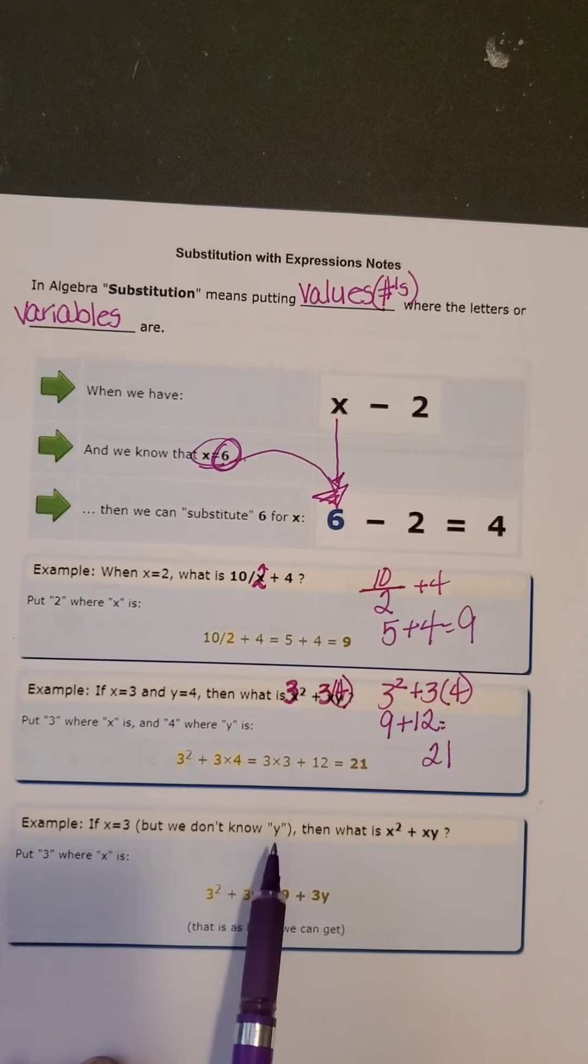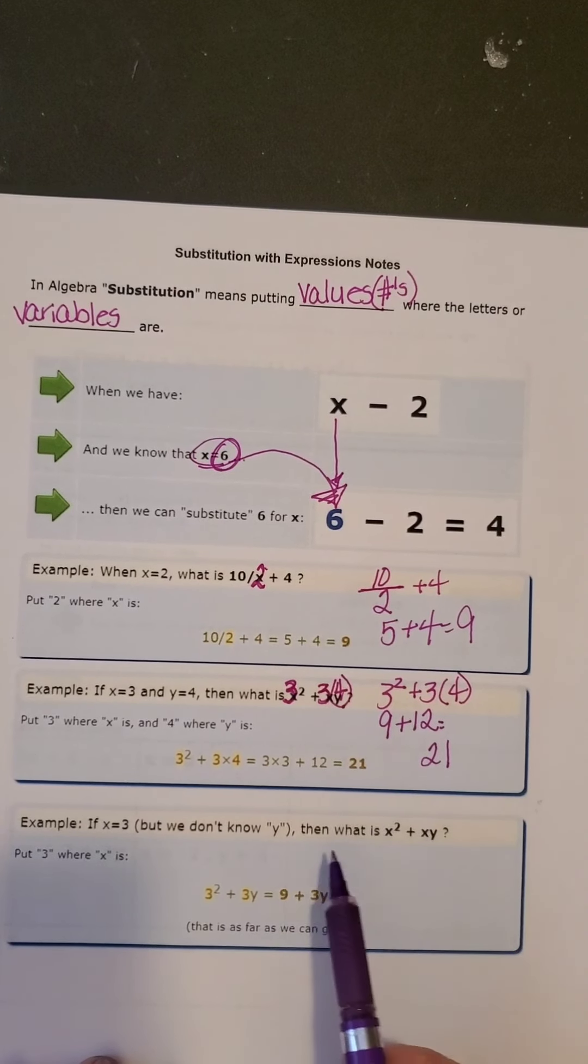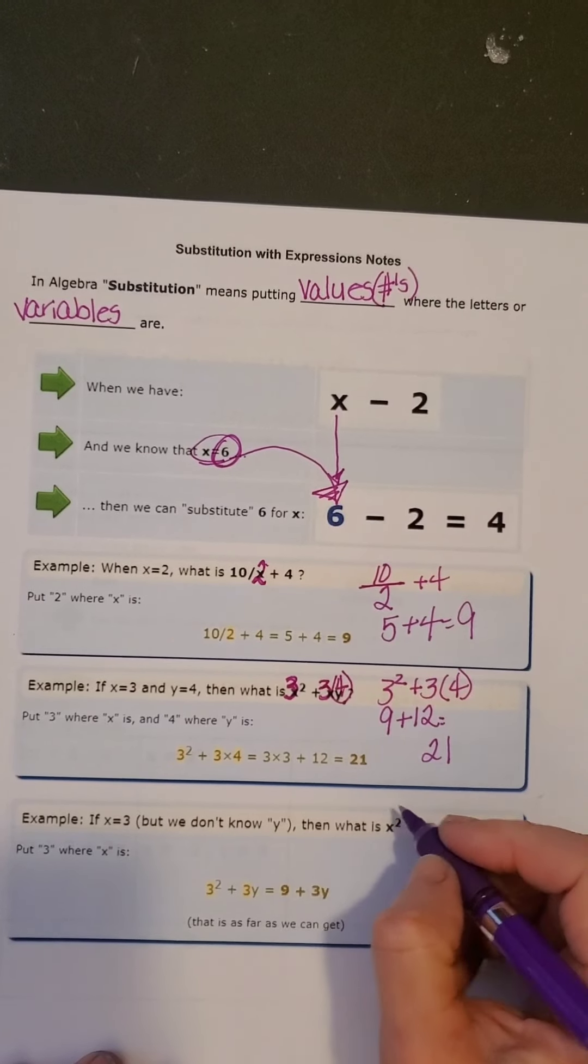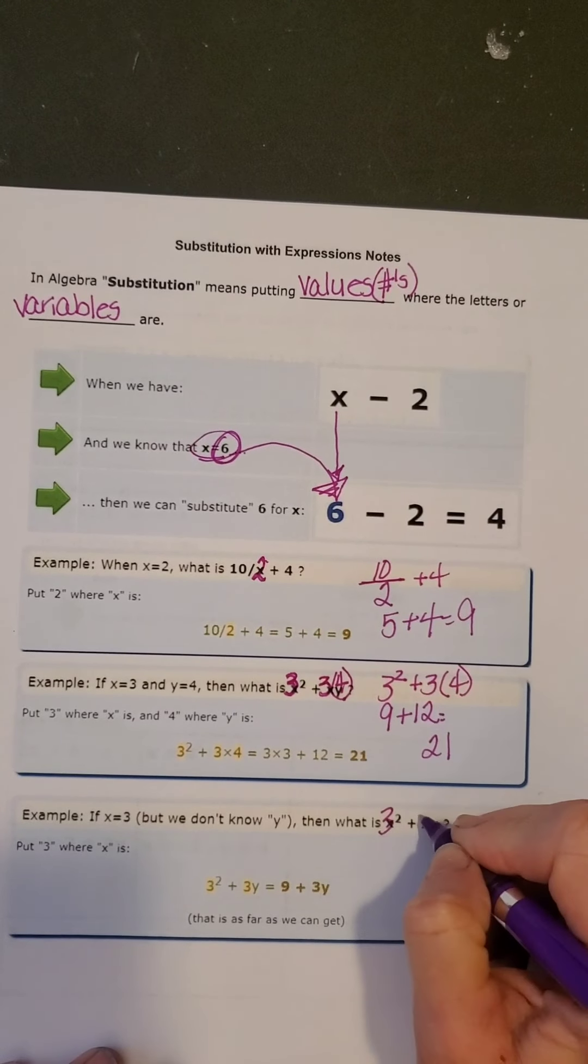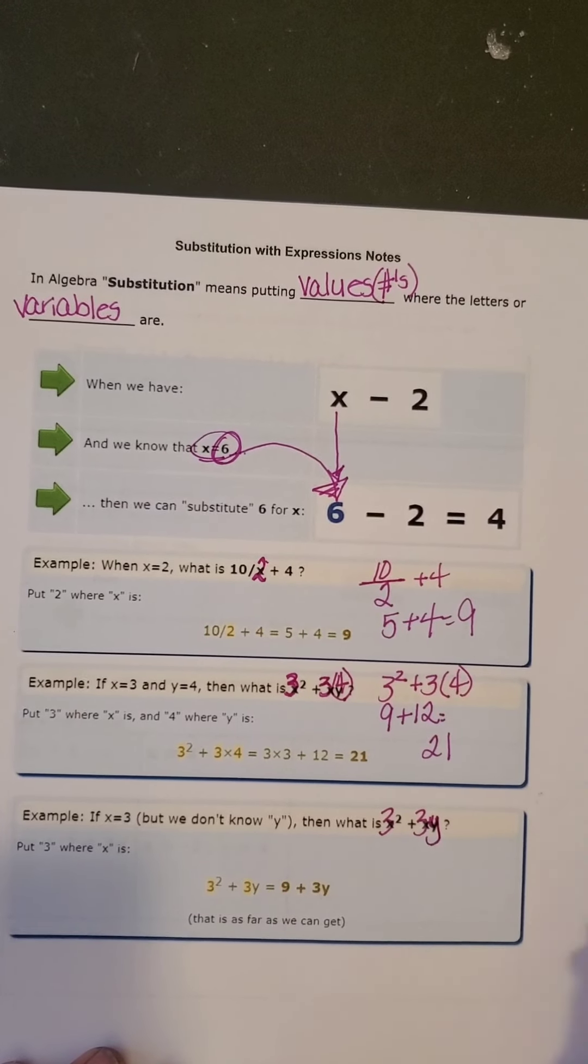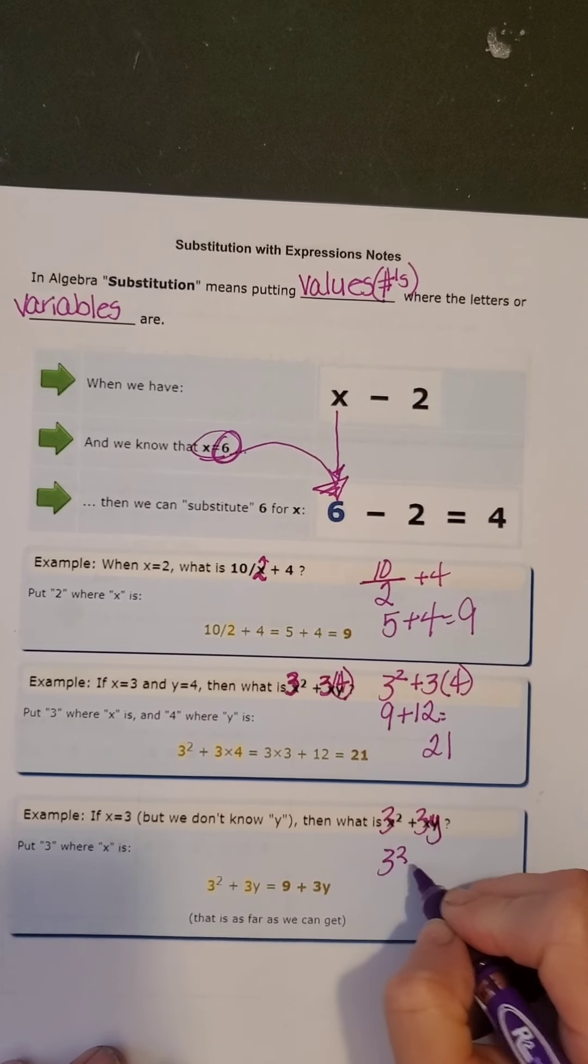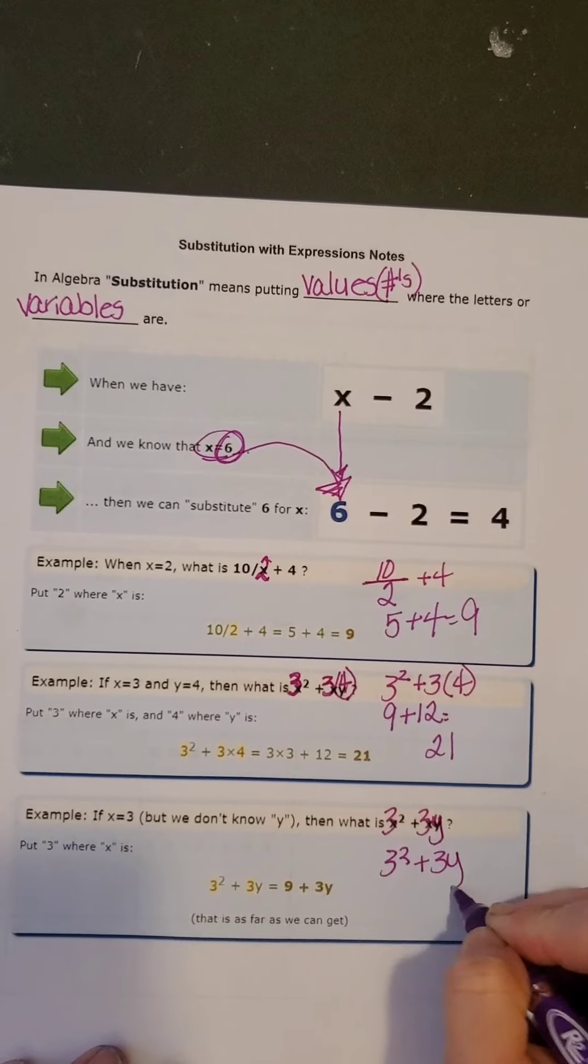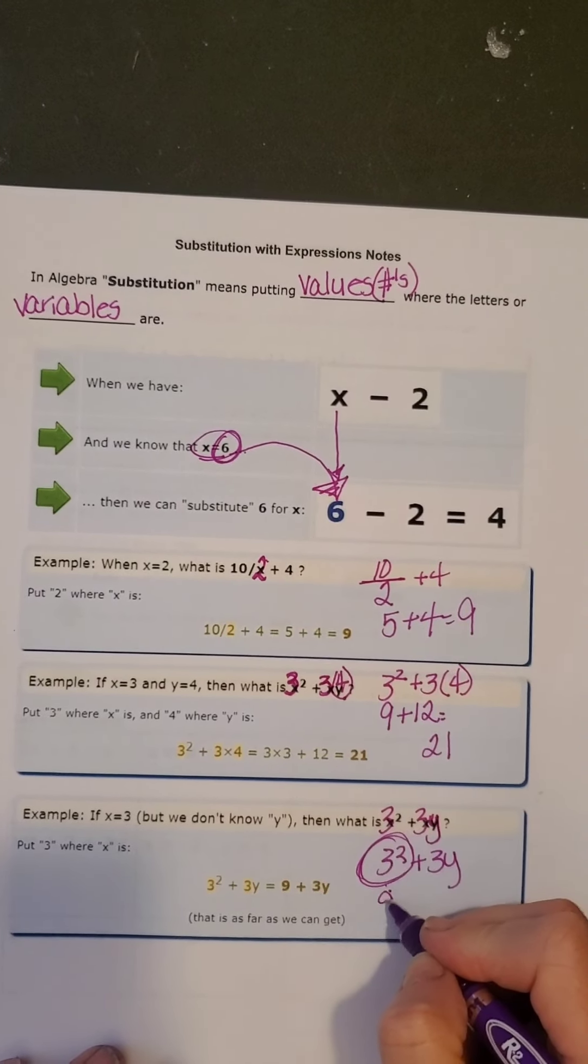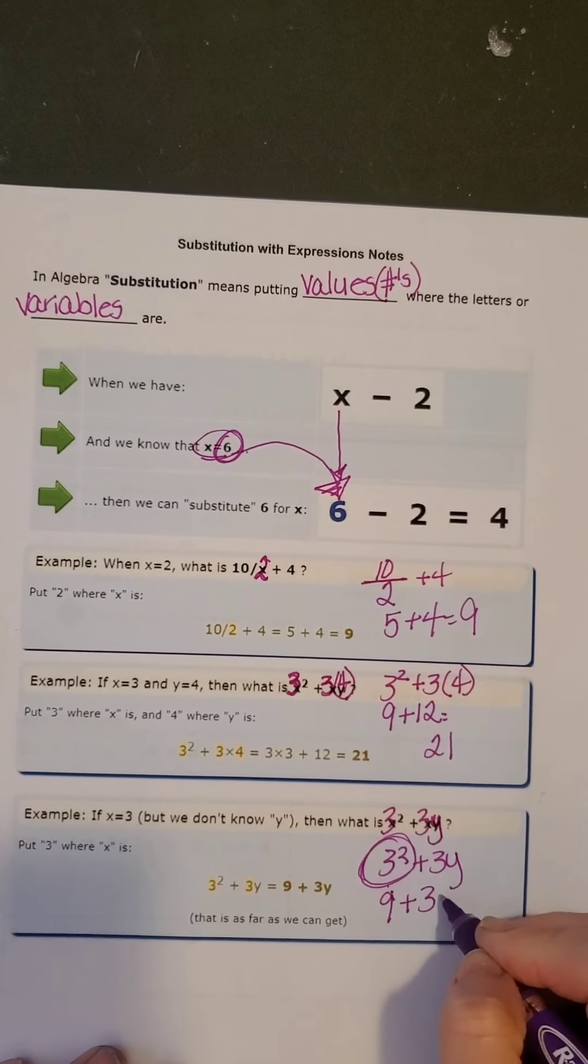x is 3, but we don't know y. Then what is x squared plus x times y? So x is 3 and we don't know what y is, so it just stays like that. So we have 3 squared plus 3y. The only thing we can do is this: 3 squared is 9 plus 3y.